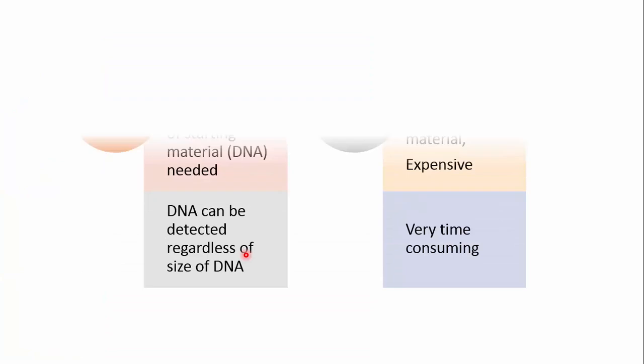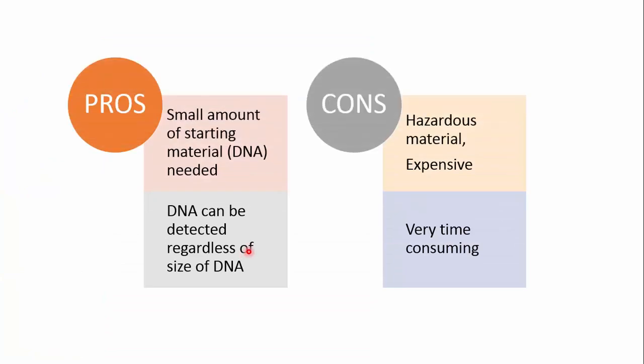Gel electrophoresis has many advantages and disadvantages. Advantages include requiring only a small amount of starting DNA material, and DNA can be detected regardless of its size. Disadvantages are that hazardous materials are used, it is expensive, and it is very time-consuming.